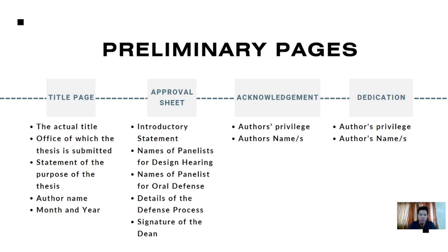The approval sheet contains introductory statements, the name of the panelists for design hearing, and the name of the panelists for oral defense, which more or less are the same individuals. Some institutions have just one set of names, but some have two different sets — one for the design hearing, which is the thesis proposal hearing, and one for the oral defense, which is the final oral defense. It also includes details of the defense process, like the date when the comprehensive exam was conducted.